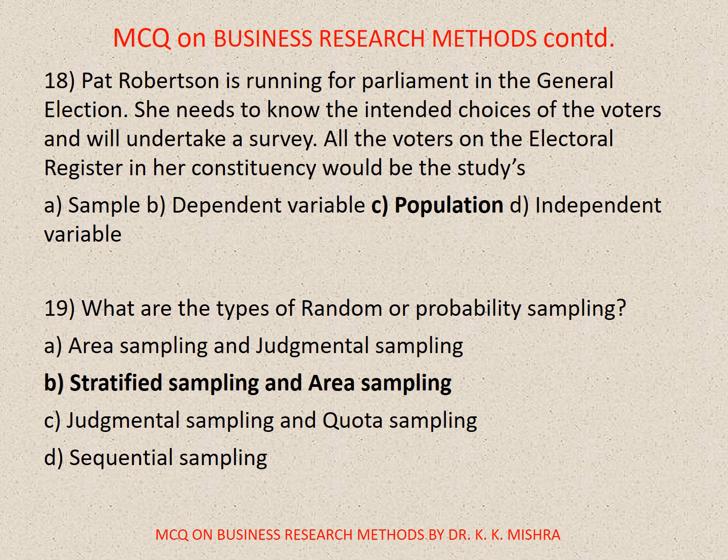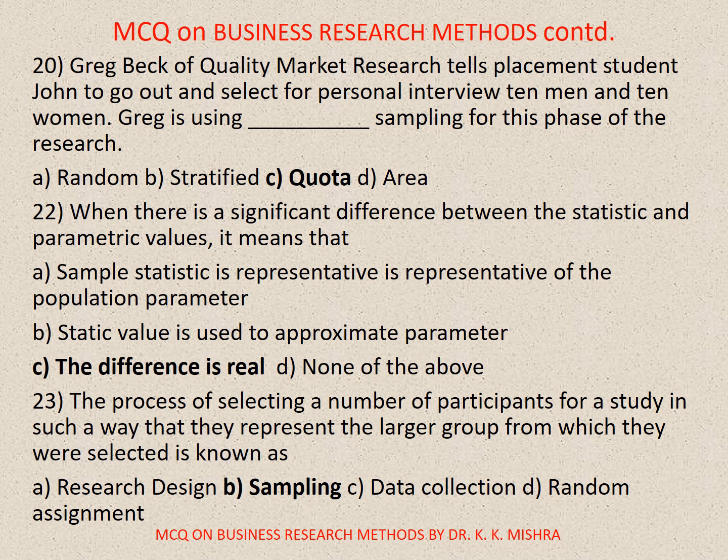Question number 19. What are the types of random or probability sampling? Options are: A. Area sampling and judgmental sampling, B. Stratified sampling and area sampling, C. Judgmental sampling and quota sampling, D. Sequential sampling. Correct option is B. Stratified sampling and area sampling. Question number 20. A market research tutor tells placement students to go out and select for provisional interview 10 men and 10 women. The sampling used is: A. Random, B. Stratified, C. Quota, D. Area. Correct option is C. Quota.